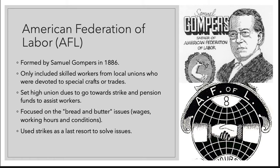The next labor union was the American Federation of Labor, led by Samuel Gompers and formed in 1886. This union was different — it only accepted skilled workers from local unions devoted to their special craft or trade. They also set union dues very high. Those dues would be used in case of a strike so that members would still have income, and they would fund a pension so that when workers retired or something happened, they would have assistance.